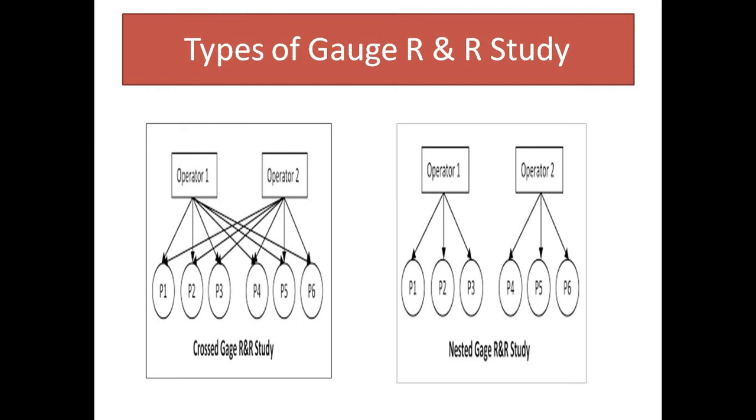In Nested Gauge R&R study, the parts are divided between operators. Here, six parts are divided into two groups. Operator 1 will measure Part 1, Part 2, and Part 3, and operator 2 will measure Part 4, Part 5, and Part 6.